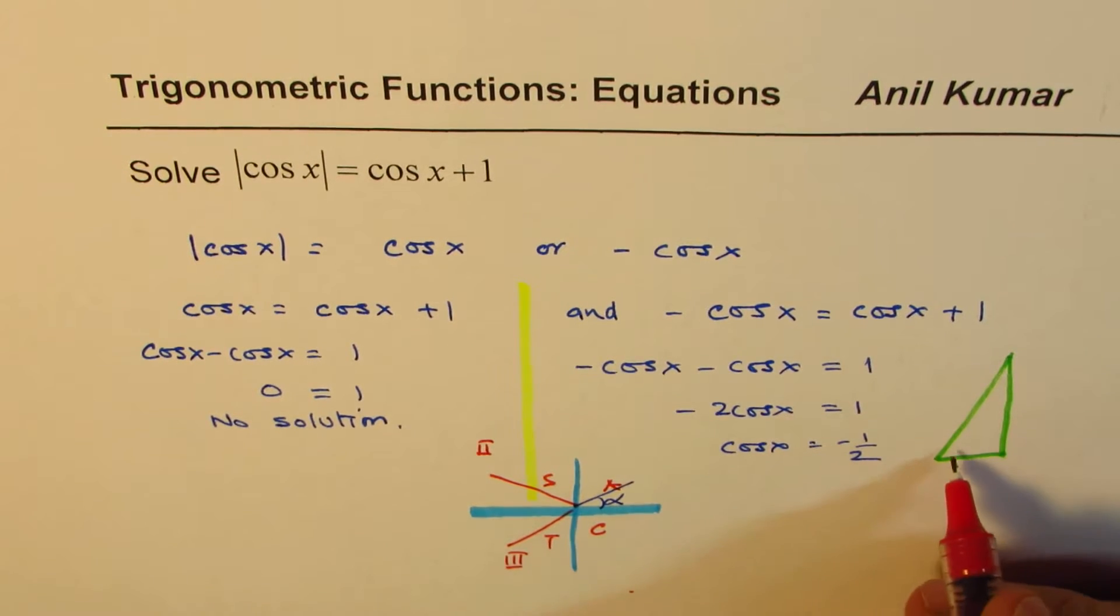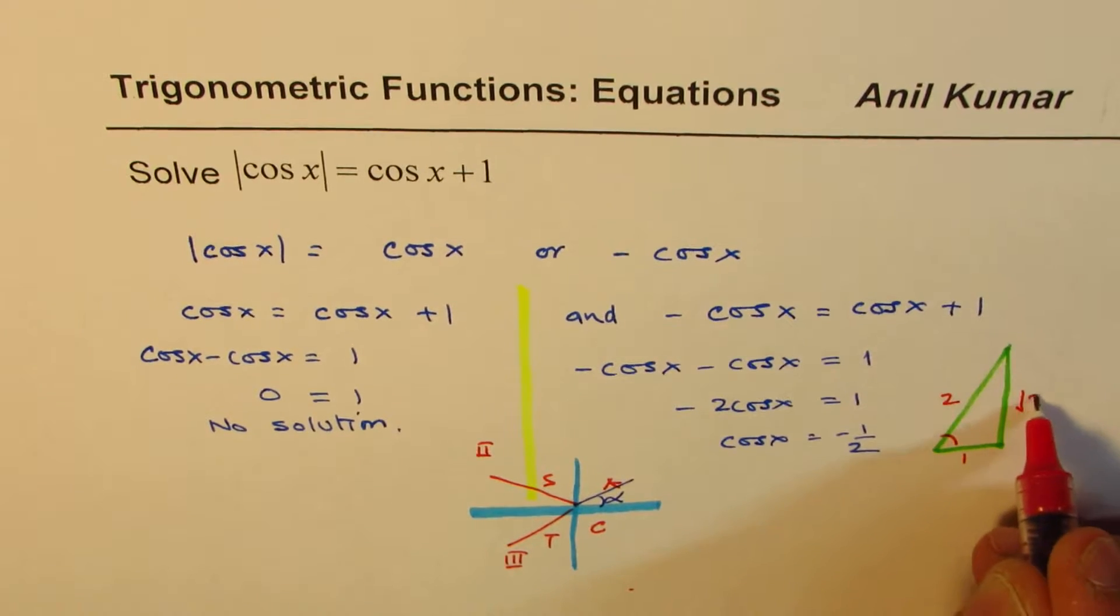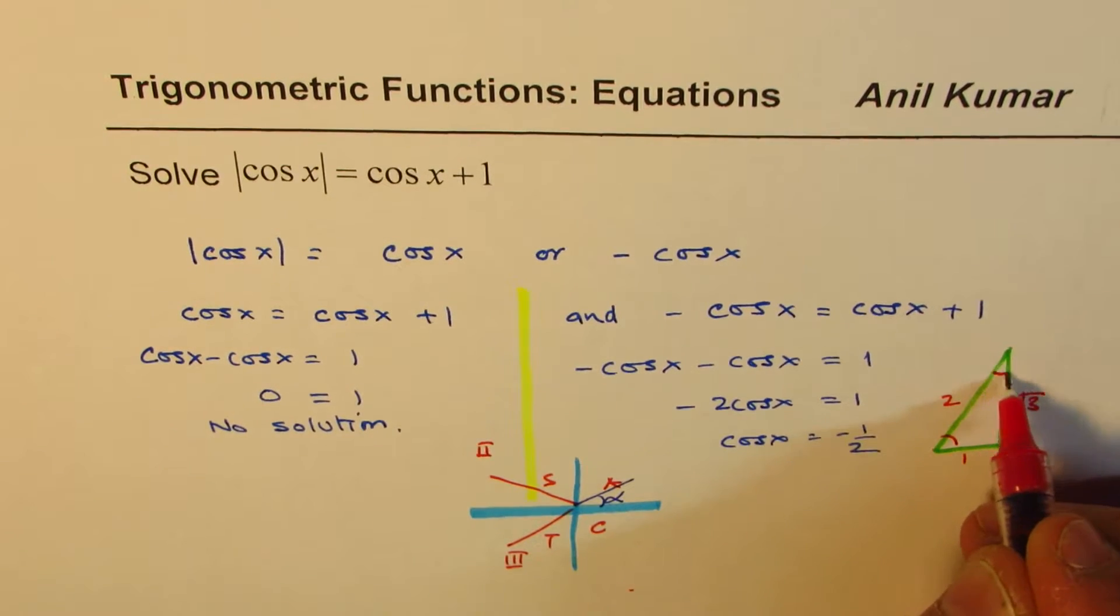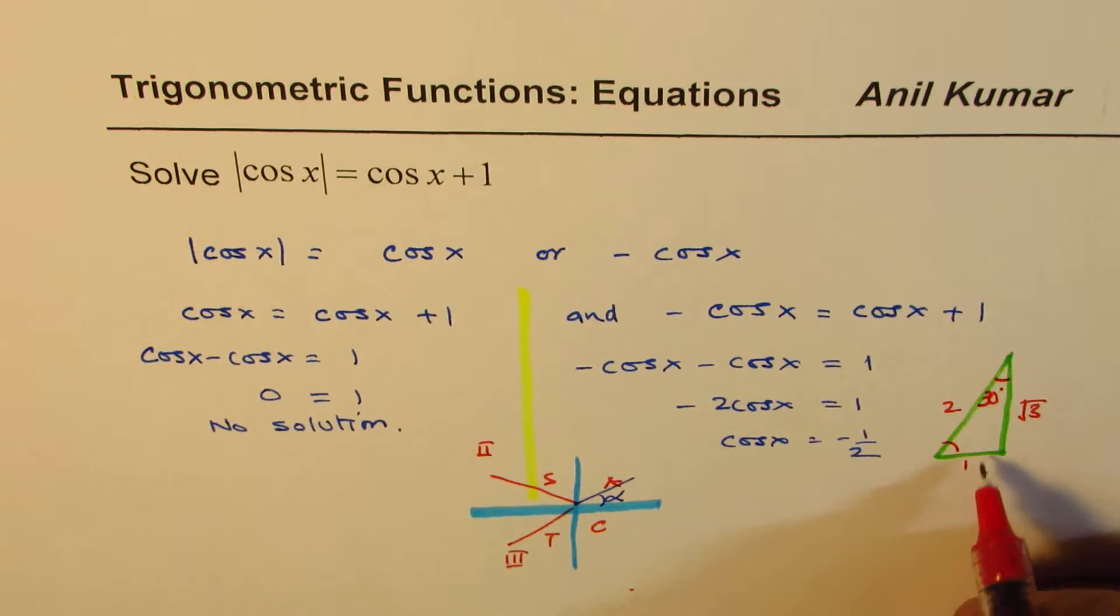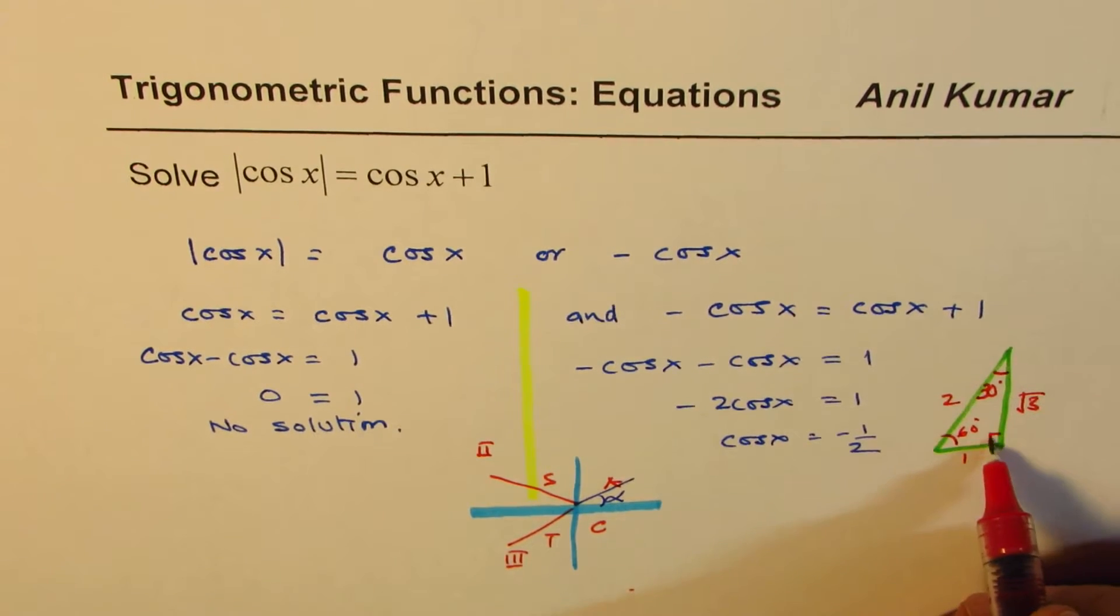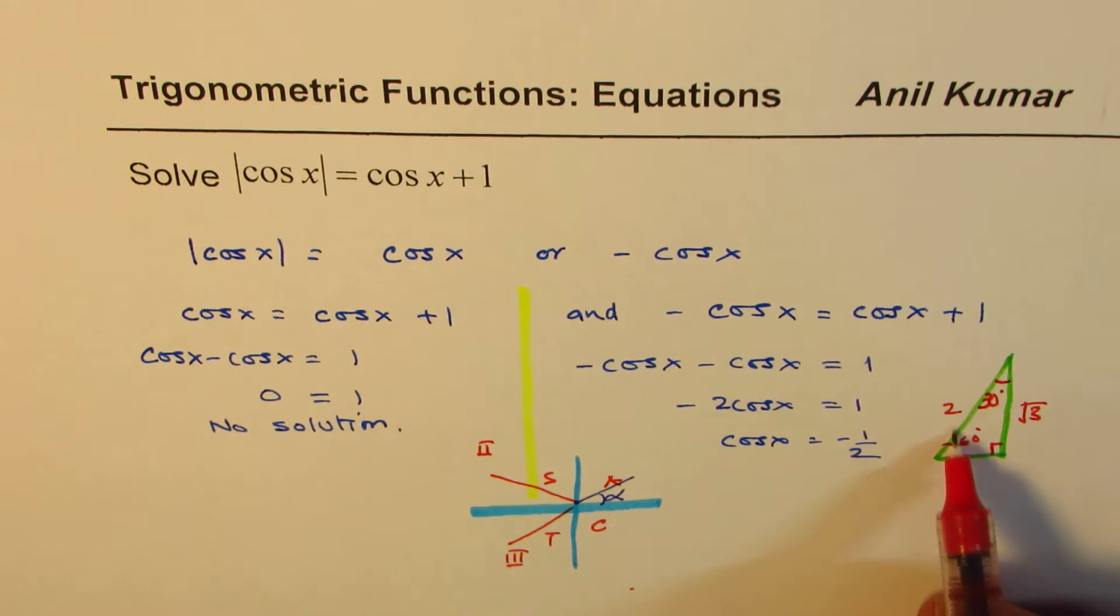So the special triangle, which is we have these sides, where that angle is 30 degrees. For 30 degrees, this is a special triangle: 30 and 60 and 90. So cos of 60 is half.